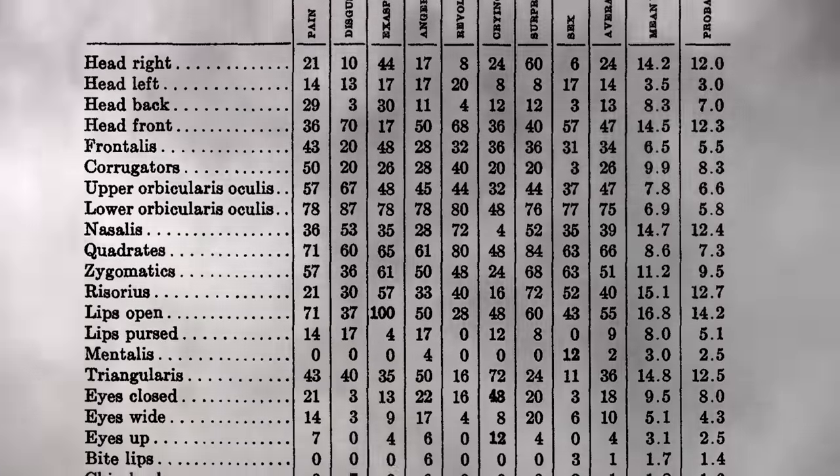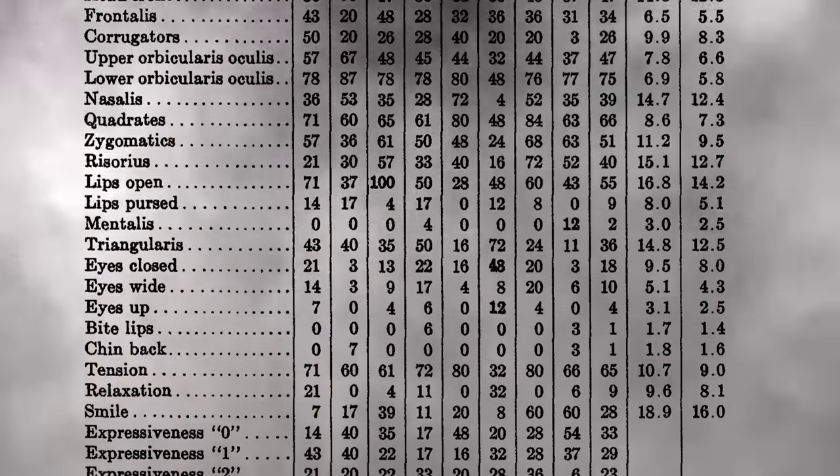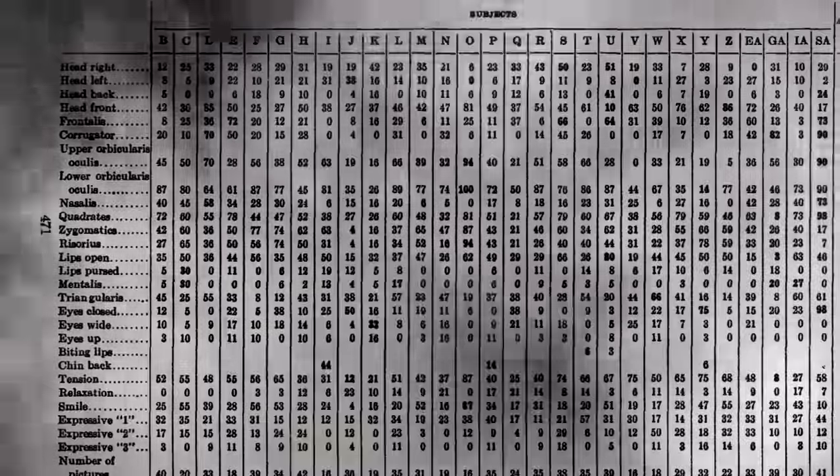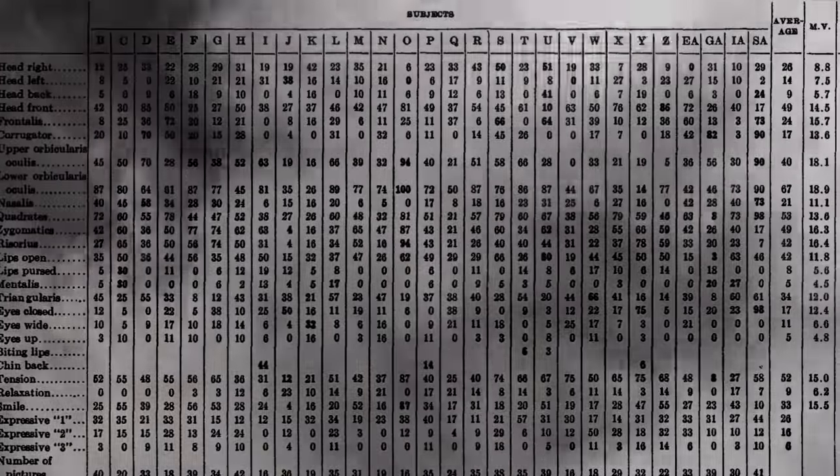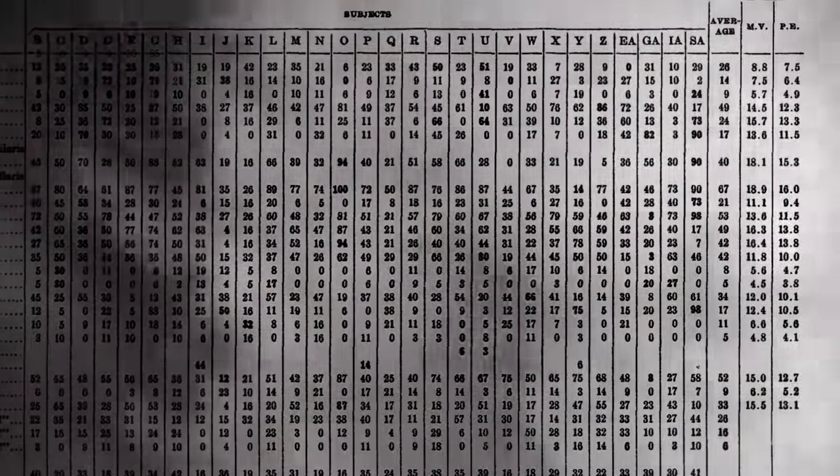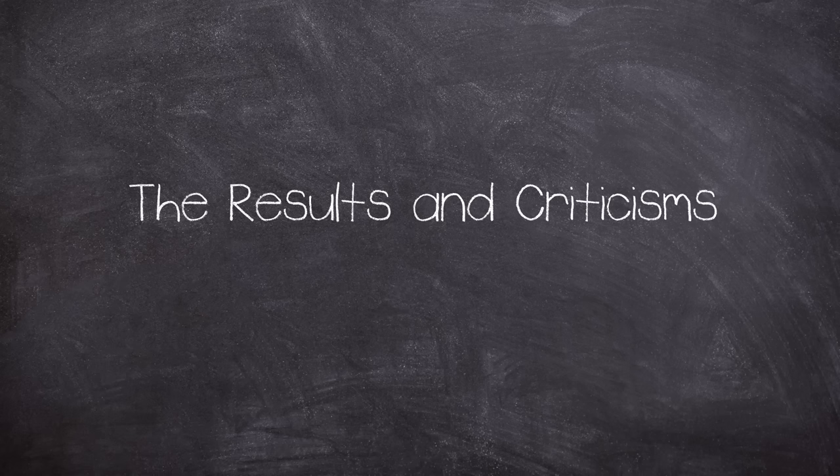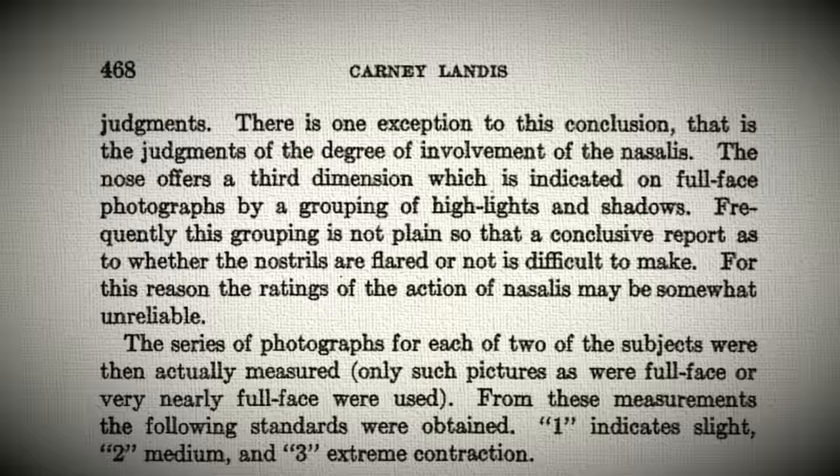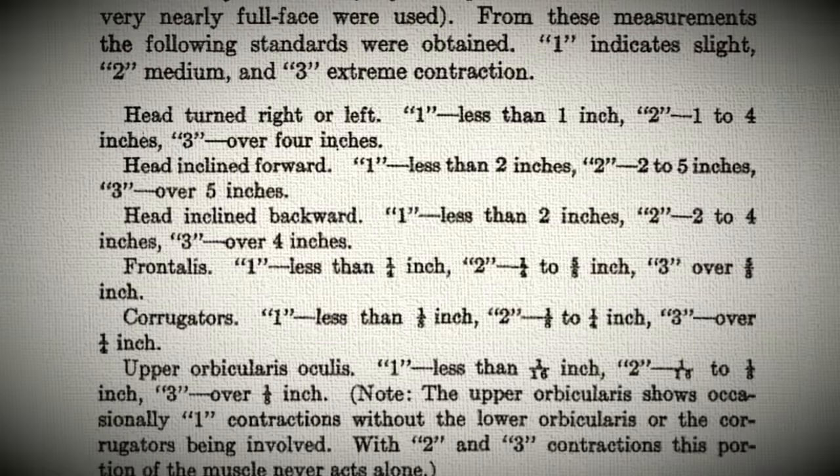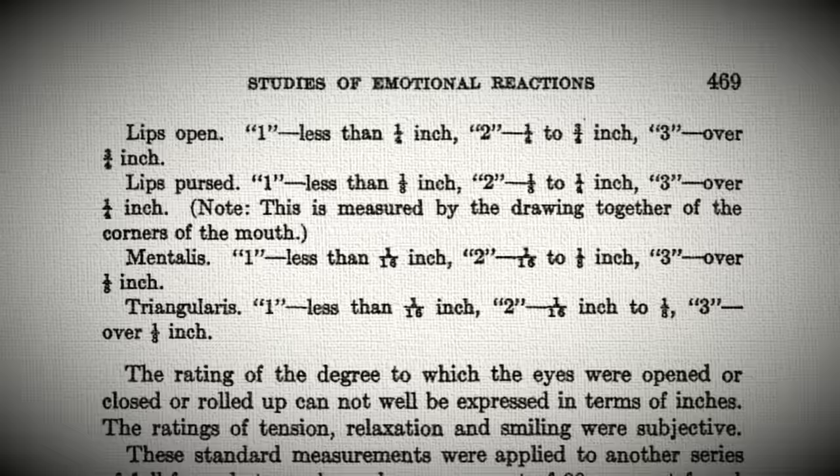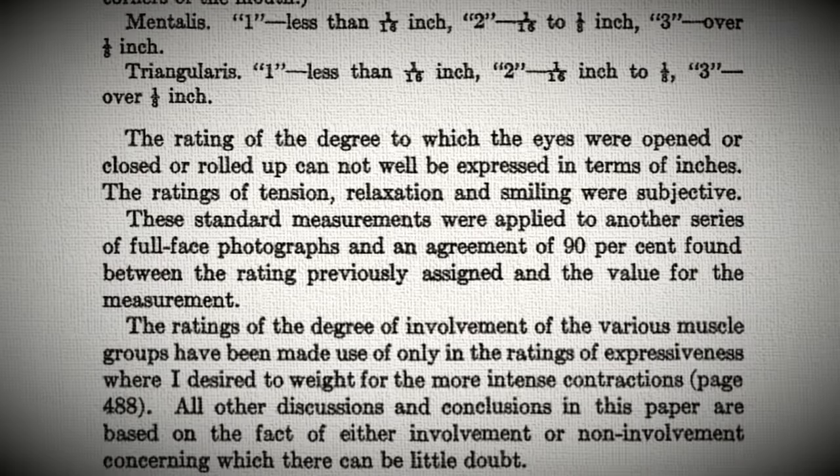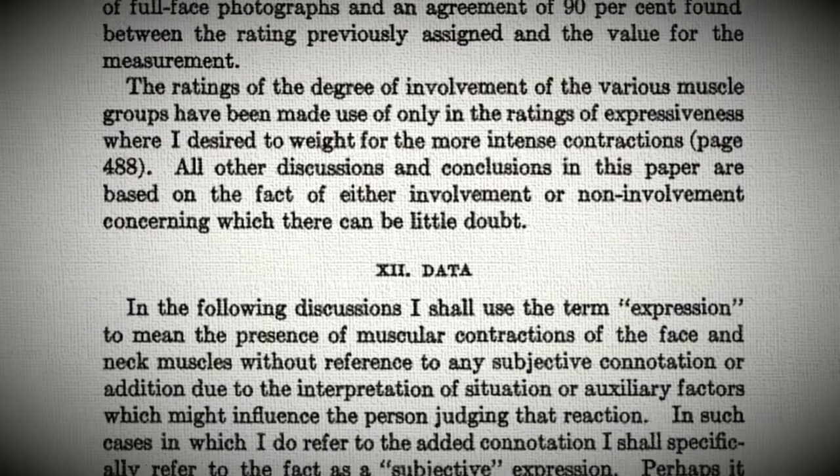The experiment generated tremendous amounts of data, hundreds of observations and around 711 photographs to sift through. Landis and his assistant started working their way through each photo, discounting any that did not show any discernible reaction. After sifting through all the data, Landis settled on a 17 point summary of the experiment, and it was a real mixed bag.